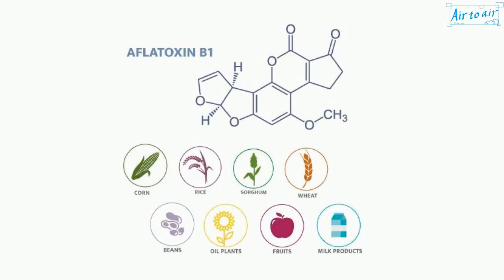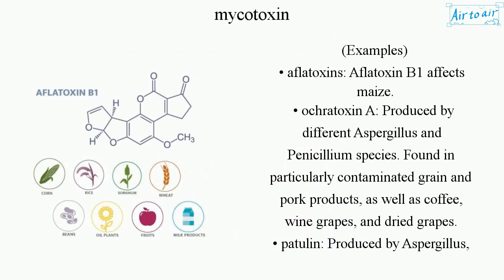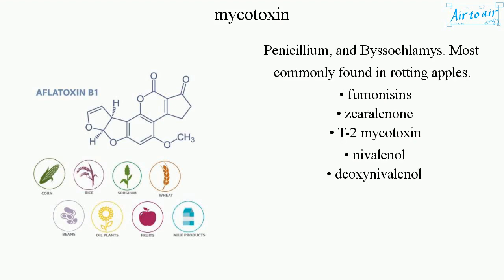Examples of mycotoxins include aflatoxin B1, which affects maize; ochratoxin A, produced by different Aspergillus and Penicillium species, found in contaminated grain, pork products, coffee, wine, grapes, and dried grapes; patulin, produced by Aspergillus, Penicillium, and Byssochlamys, most commonly found in rotting apples; as well as fumonisins, zearalenone, T-2 toxin, nivalenol, and deoxynivalenol.